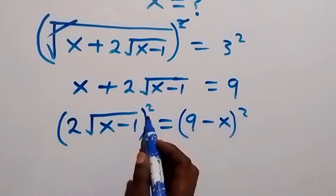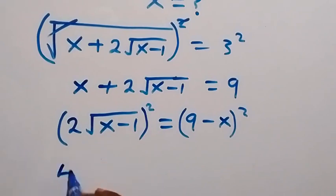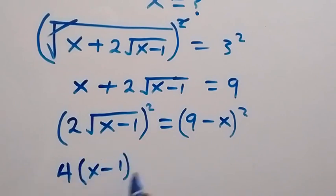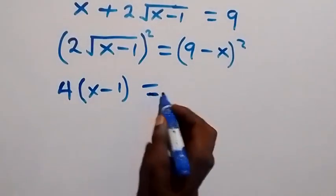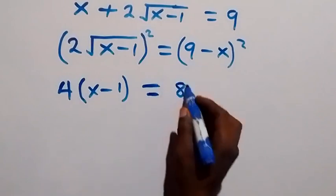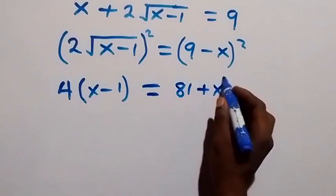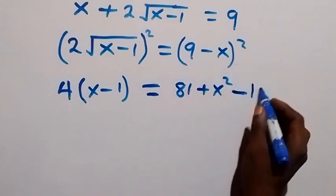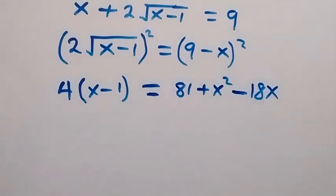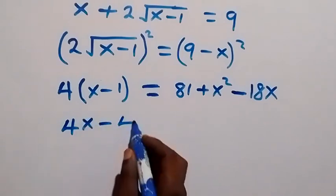From here we can square both sides again. This square affects both terms: 2 squared is 4, and the square cancels the square root, leaving x minus 1. On the right side, expanding gives 9 squared which is 81, plus x squared, minus 2 times 9 times x which is minus 18x.